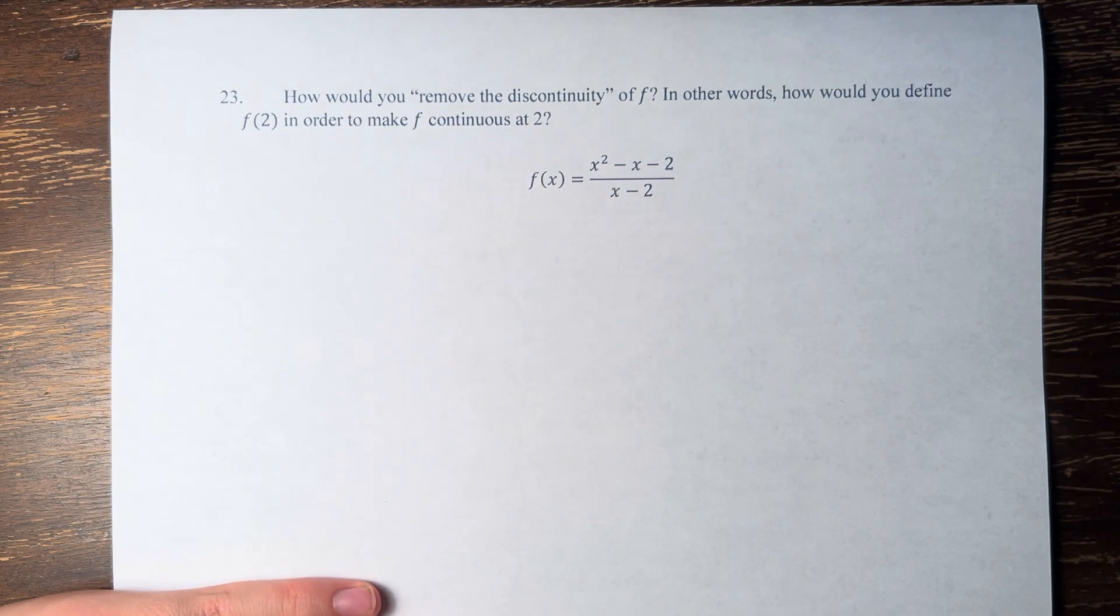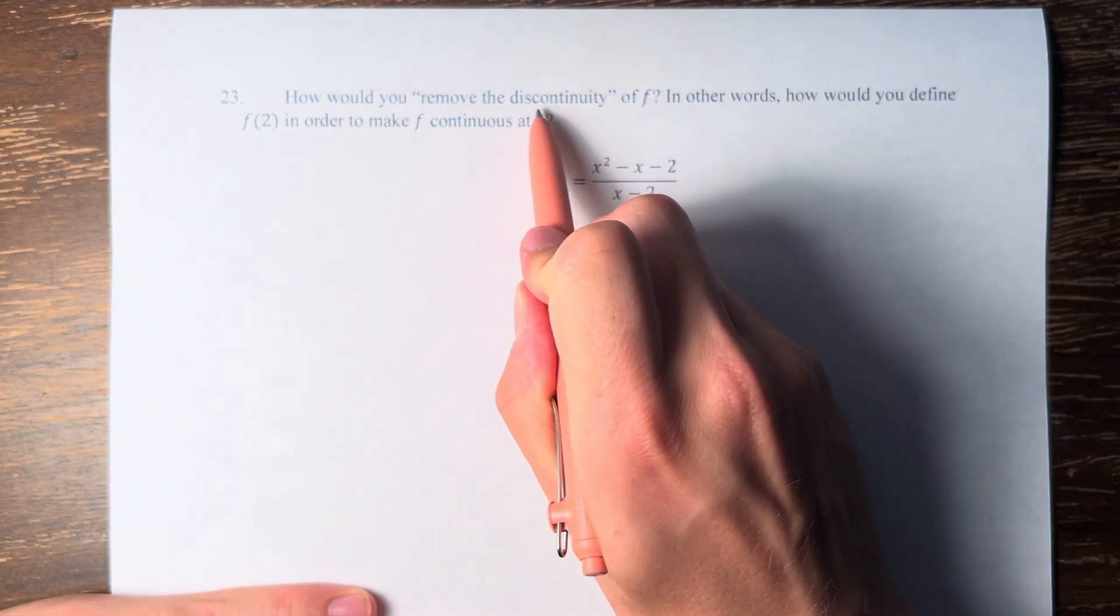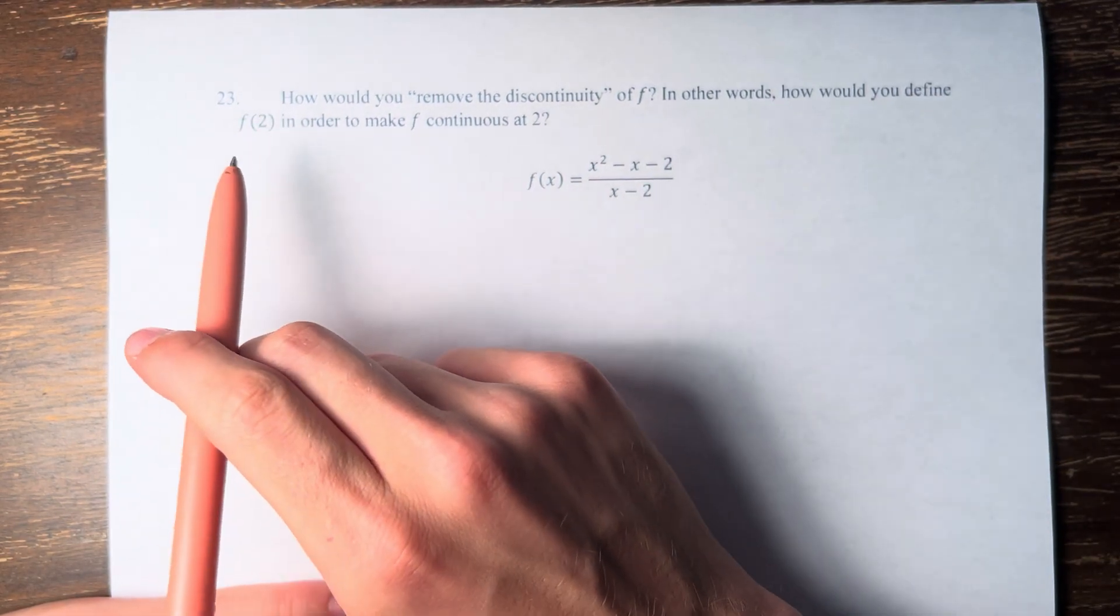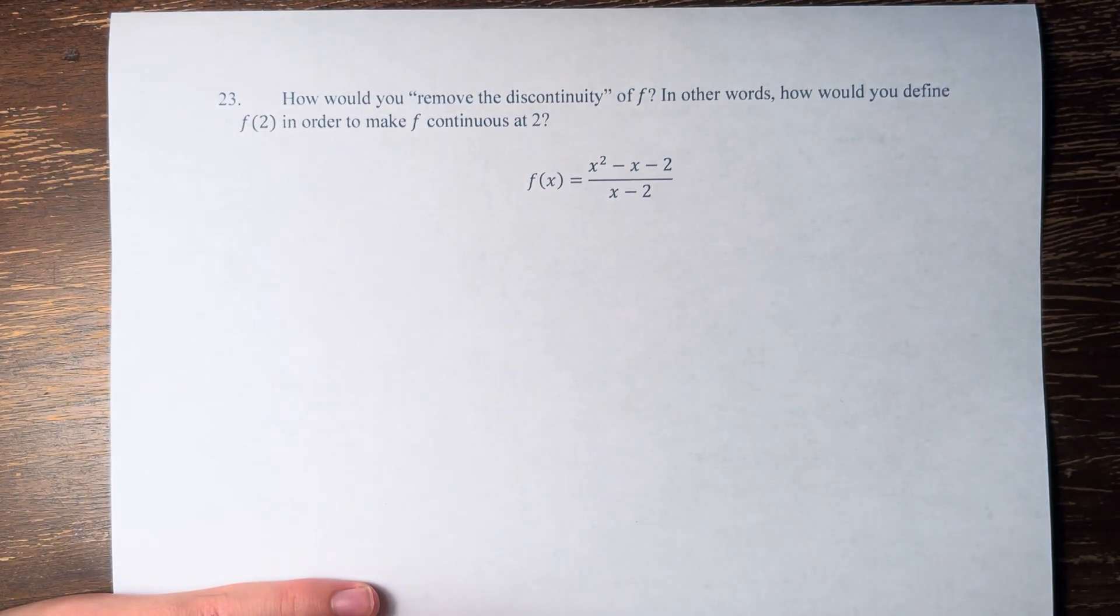Hello, and welcome back to another video. In this problem, we're asked how would you remove the discontinuity of f? In other words, how would you define f of 2 in order to make f continuous at 2?